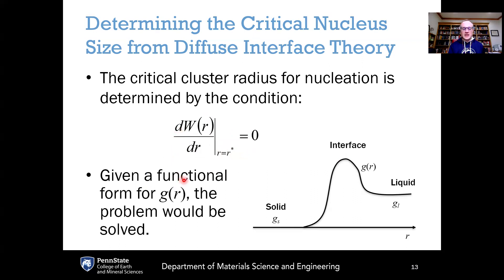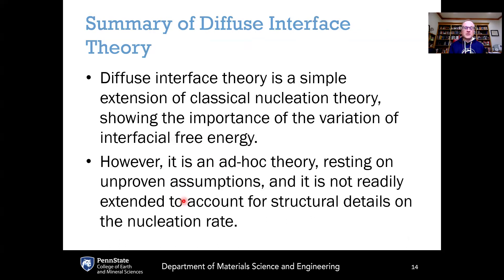If we are given a functional form for g(r), the problem would be solved. The difficulty is getting that functional form for g(r), because this is a phenomenological model that doesn't provide the pathway for actually obtaining it. Diffuse interface theory is nice in that it is a simple extension of classical nucleation theory and shows how to account for continuous variations of free energy across an interface. However, it is an ad hoc theory resting on unproven assumptions, and it doesn't give you the means to calculate that g(r) function.